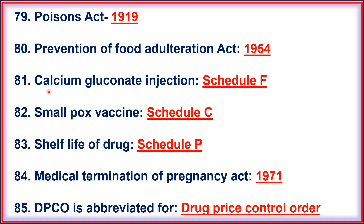81. Calcium Gluconate Injection comes under Schedule F. 82. Small Pox Vaccine comes under Schedule C. 83. Shelf Life of Drug comes under Schedule B. 84. Medical Termination of Pregnancy Act, 1971. 85. DPCO is abbreviated for Drug Price Control Order.